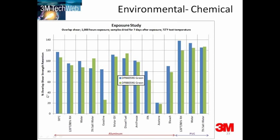Two substrates: aluminium and PVC. This is shear strength on the y-axis. As you can see, different degrading factors and different solvents have different effects. They also have different effects depending on the substrate. For example, water has very little effect on PVC, whereas on aluminium the water has much more pronounced effects, reducing the bond strength over 30%. But this kind of data and understanding will help you design joints that will last.